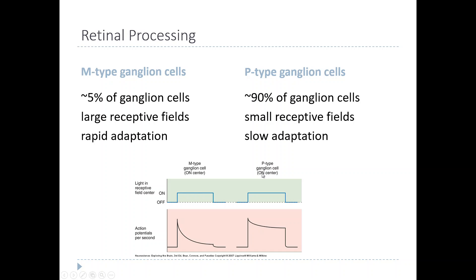If you look at the response profile of a P-type ganglion cell, it does the same thing at first — it fires a burst of action potentials when light first comes on — but then it sustains that level of activity the entire time the stimulus is present. So we say that the M-type ganglion cell is rapidly adapting, whereas the P-type ganglion cells are slowly adapting.